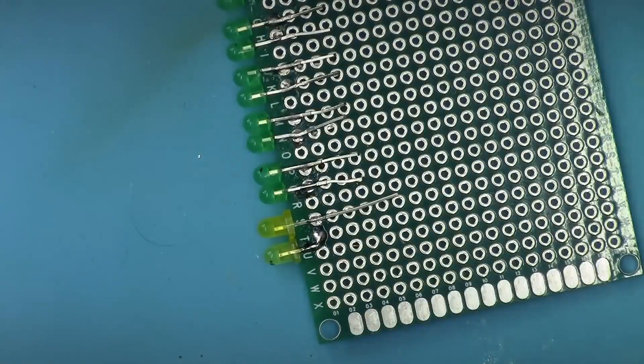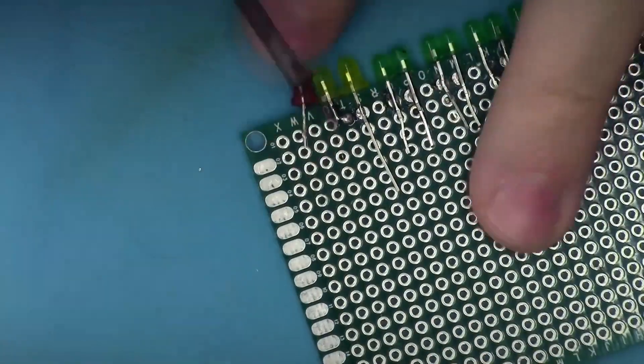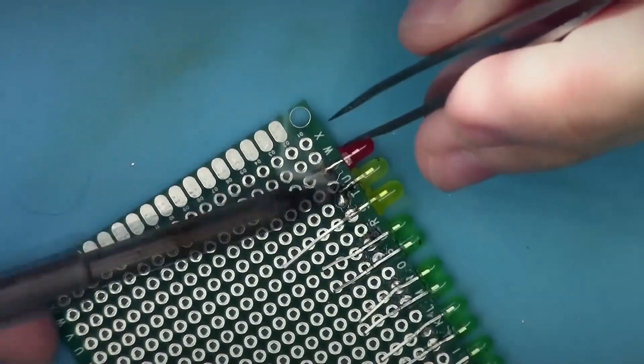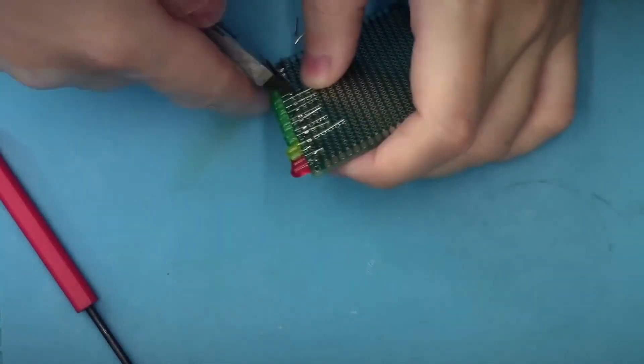Then we solder the ID3, the counter, and the chip on which we will assemble the generator. In my case, it's the K155LN1.